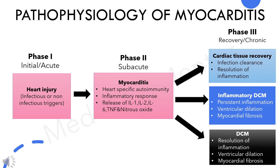In Phase 2, there is activation of heart-specific autoimmunity and an inflammatory response. At the same time, there is local release of cytokines such as interleukin-1, interleukin-2, interleukin-6, tumor necrosis factor, and nitric oxide. These play a crucial role in T-cell reaction and autoimmune activation.